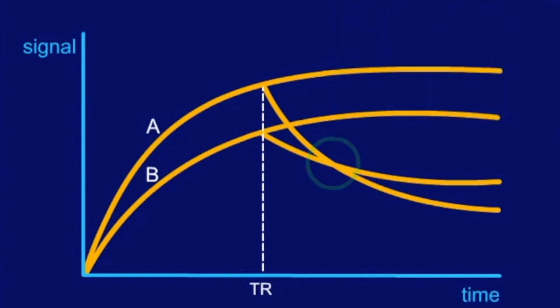The fact that the curves intersect is very important. With a TE before the crossing point, TE1, tissue A will have a higher signal intensity. With a TE right at that point, TEC, we cannot distinguish the tissues at all, as they have the same signal intensity.